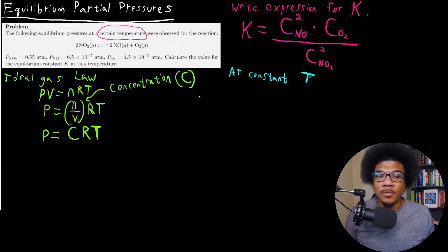So at constant T, so let me show you what I'm doing here. So at constant T, we're basically saying that the partial pressure of a given substance in a mixture is gonna be directly proportional to the concentration of that substance in the mixture. So we can rewrite this equilibrium constant expression in terms of the partial pressures.